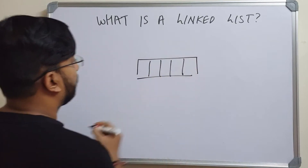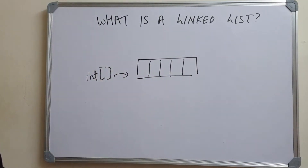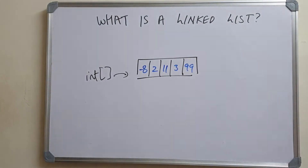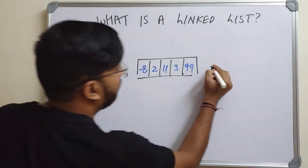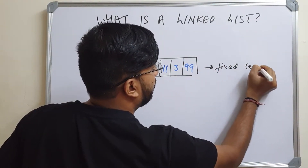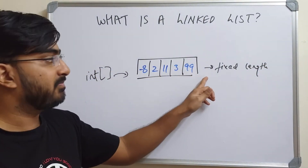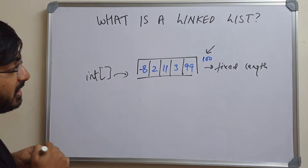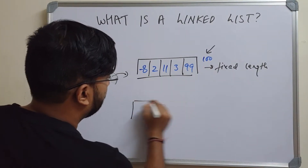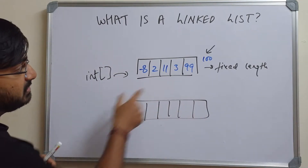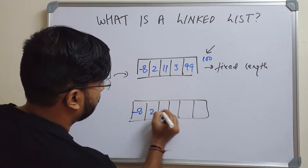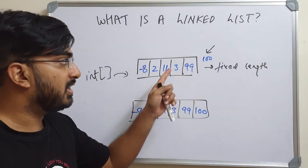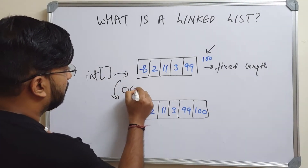The array has five locations and it's an integer array with values minus 8, 2, 11, 3, and 99. What if I want to insert one more value into this array? Arrays are fixed length — I cannot append one more location. So if I want to add the value 100 at the end, I have to create another array of size 5 plus 1, copy all the original values, and then place the sixth value. So inserting one more value is an O(n) operation.